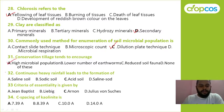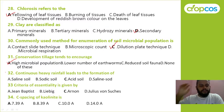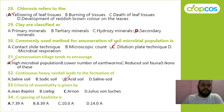Continuous heavy rainfall leads to the formation of saline soil, sodic soil, acid soil, or none? Correct answer: acid soil. Criteria of essentiality given by Liebig, Jean, Arnon, or Julius? Correct answer is Arnon. C-spacing of kaolinite: 7.3, 8.3, 10, or 14 angstroms? Correct answer is A — 7.3 angstroms.